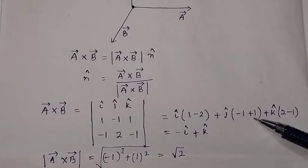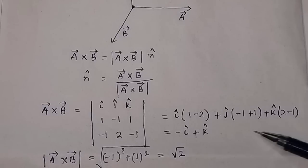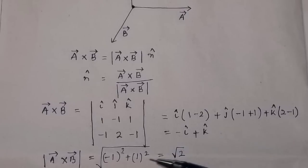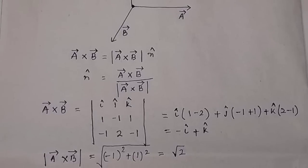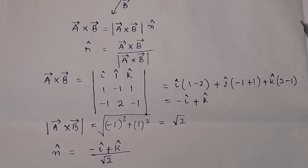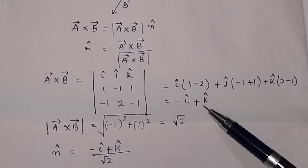So j-cap component is equal to 0, and k-cap component equals 1. Therefore the cross product a×b is equal to minus i-cap plus k-cap. The magnitude of the cross product — we have found that a×b equals minus i-cap plus k-cap.